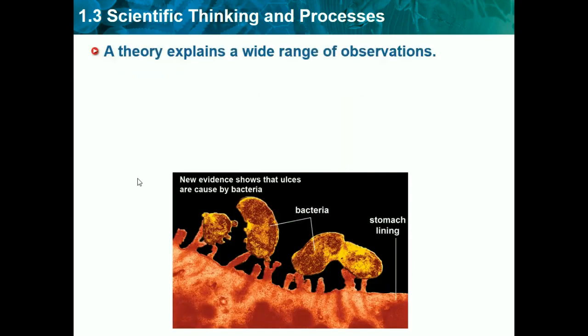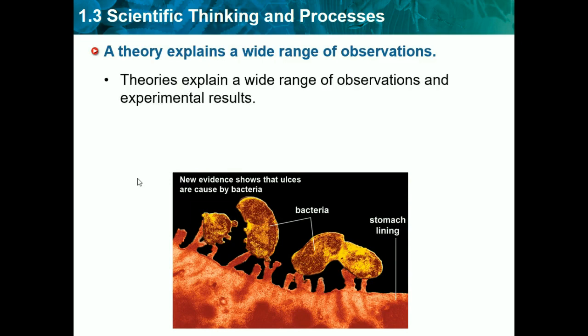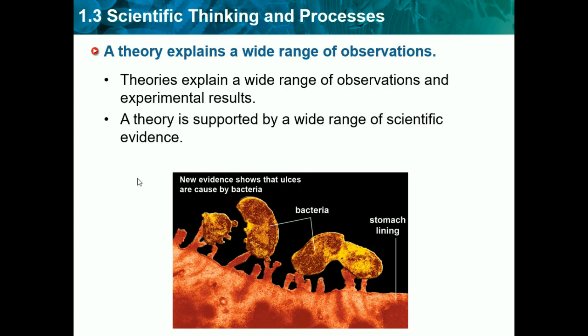A theory explains a wide range of observations. Theories explain a wide range of observations and experimental results, and a theory is supported by a wide range of scientific evidence. Theories can also change based on new evidence — so if we get new technology or find something that contradicts our old theory, it can be changed. They're not set in stone. But you need to remember that theories describe a given phenomenon.